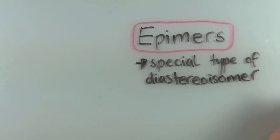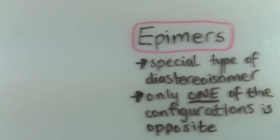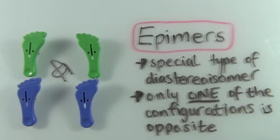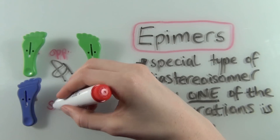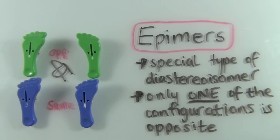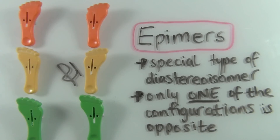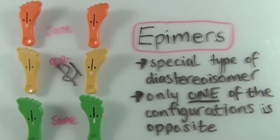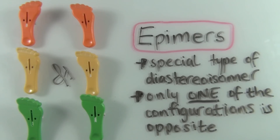Now it's time to talk about epimers. Epimers are just a special type of diastereoisomer, and what's so special about them is the fact that only one corresponding configuration is opposite, and all the rest of the configurations are the same. The way I like to think about epimers is by saying: if that one configuration was changed, then I would have two identical molecules. So epimers are like almost having two identical molecules, but just one configuration is changed.